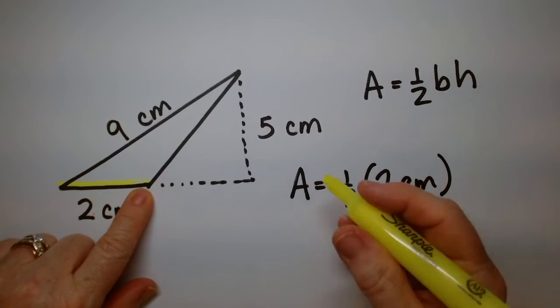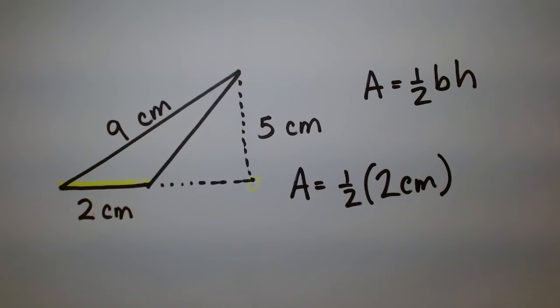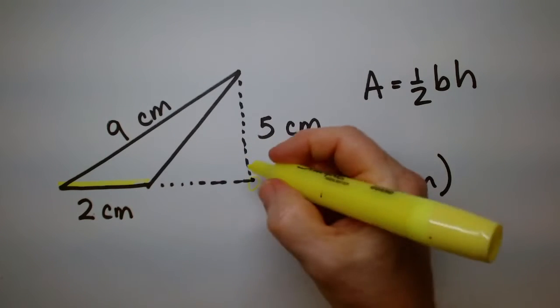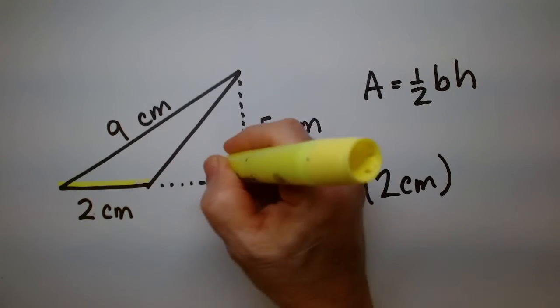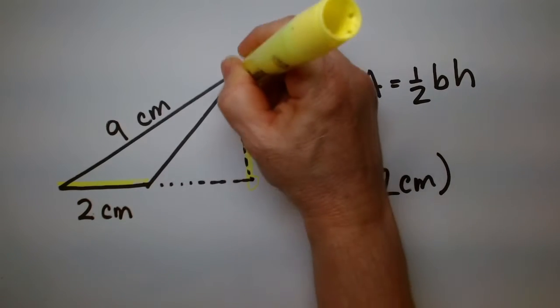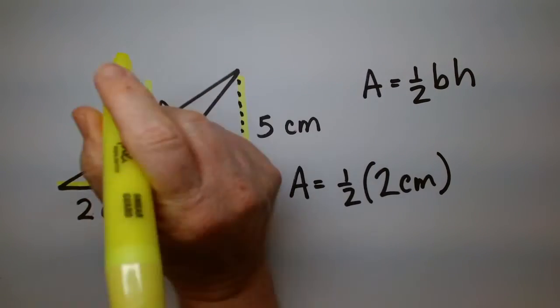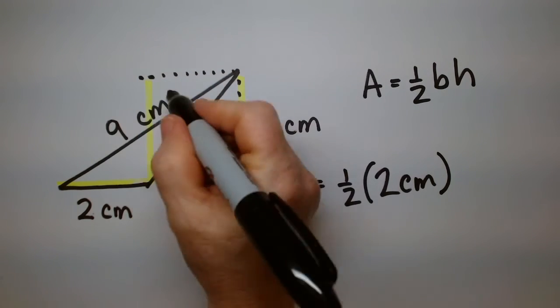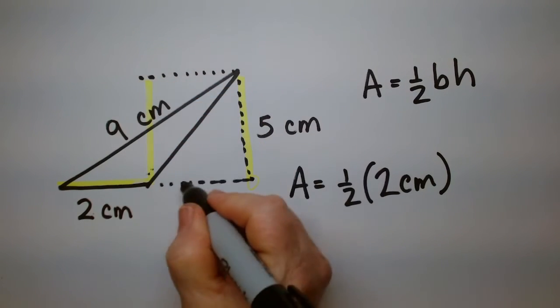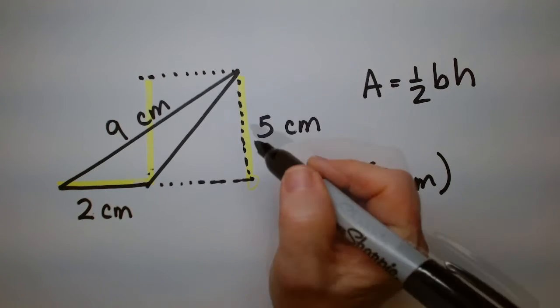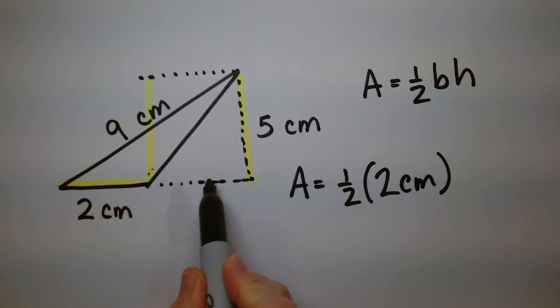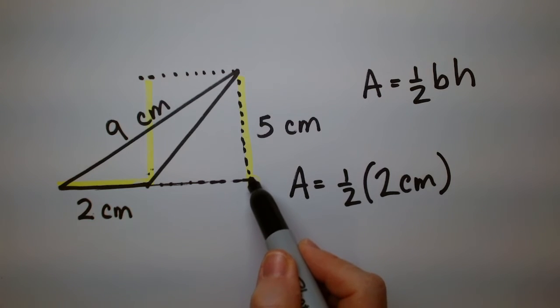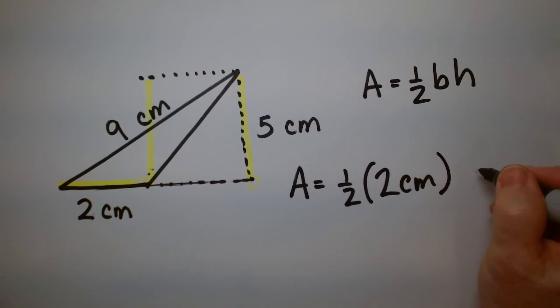So this may seem a little strange because this point isn't even on the triangle. But we still need the distance, perpendicular distance, from here to the top. So you can either take it from here on over and come over this way. This is still 5 centimeters. Or you can extend it over and go up 5 centimeters. So either way, we need a perpendicular distance from the base to the highest point, even if the point that you start from is off the triangle. So this is 5 centimeters.